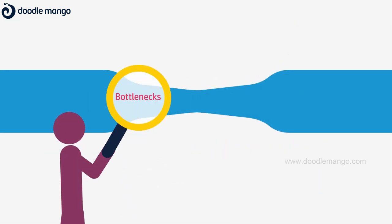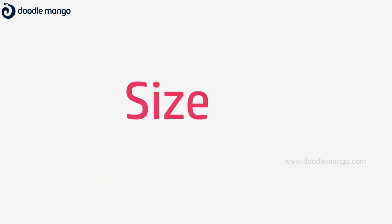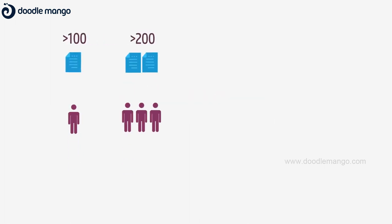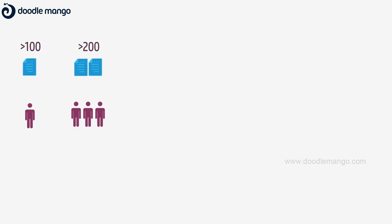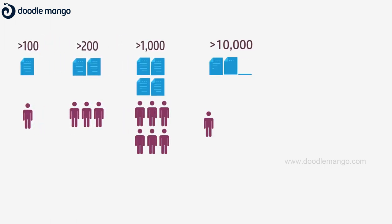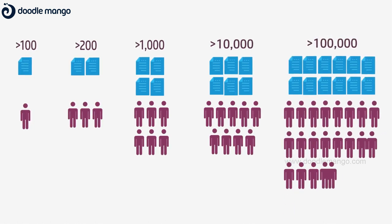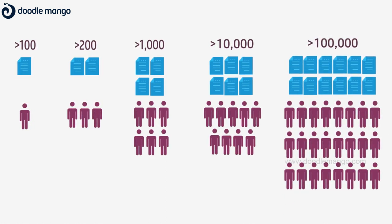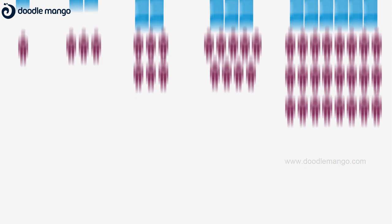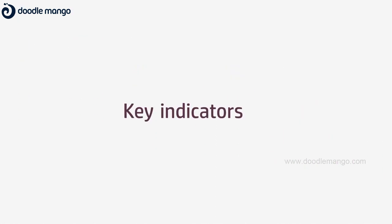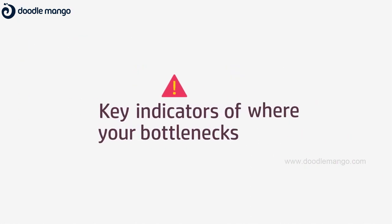So how can you identify bottlenecks? That depends on the size of your business. Perhaps you can easily add people when scaling up to 200 orders per day. But what happens when you require 1,000 jobs per day, or 10,000, or 100,000? How many people is it feasible to keep hiring? This is often a key bottleneck indicator.